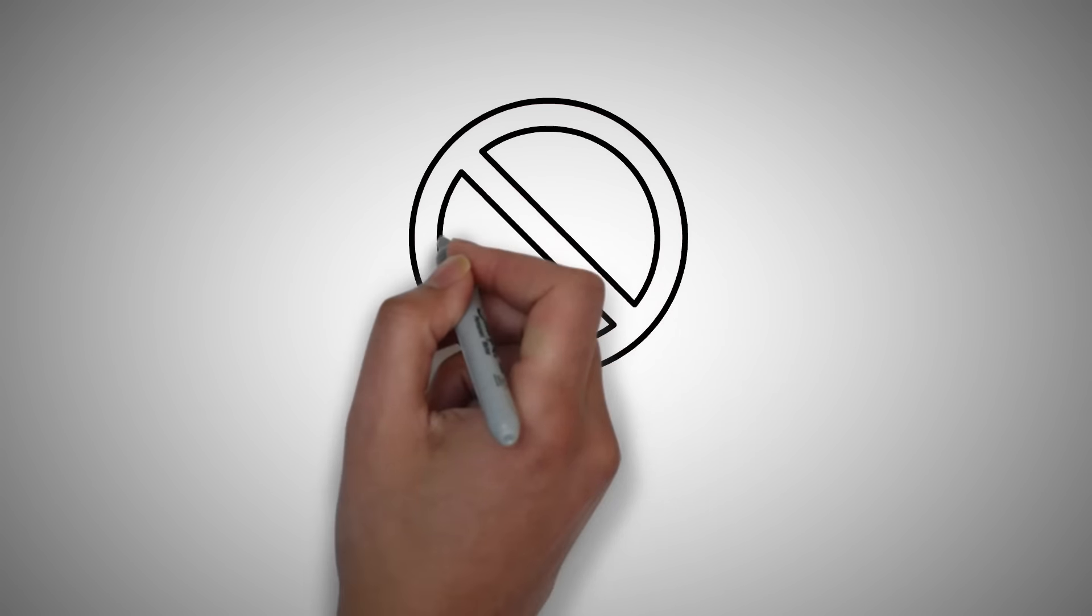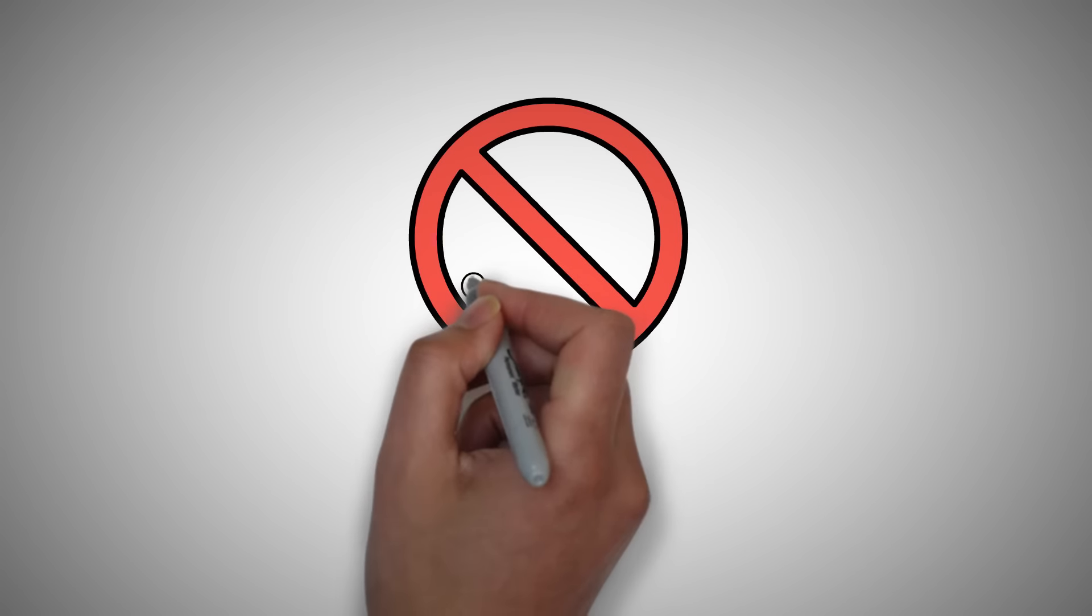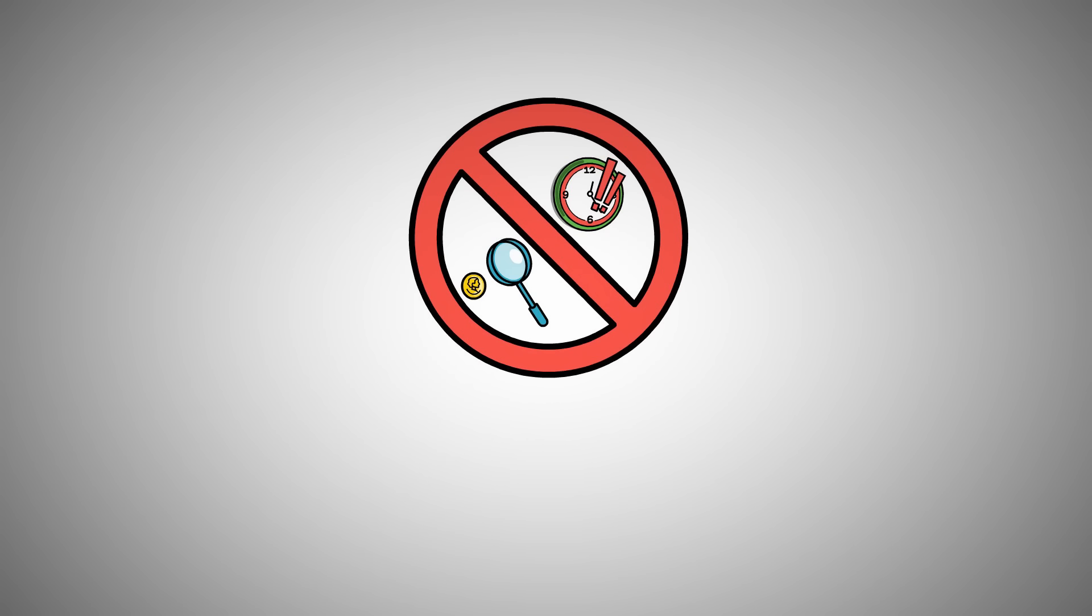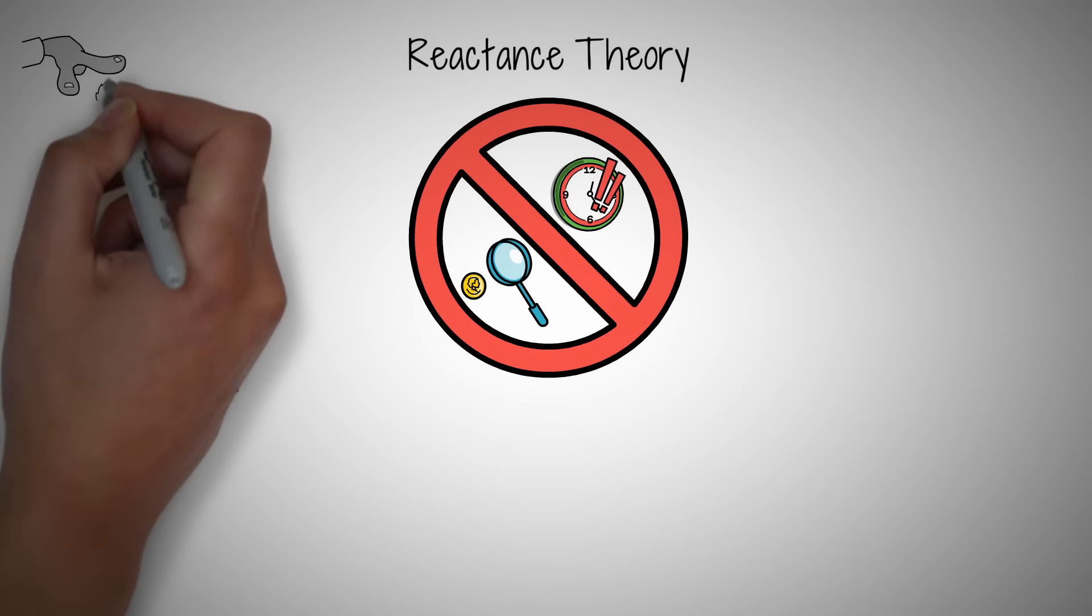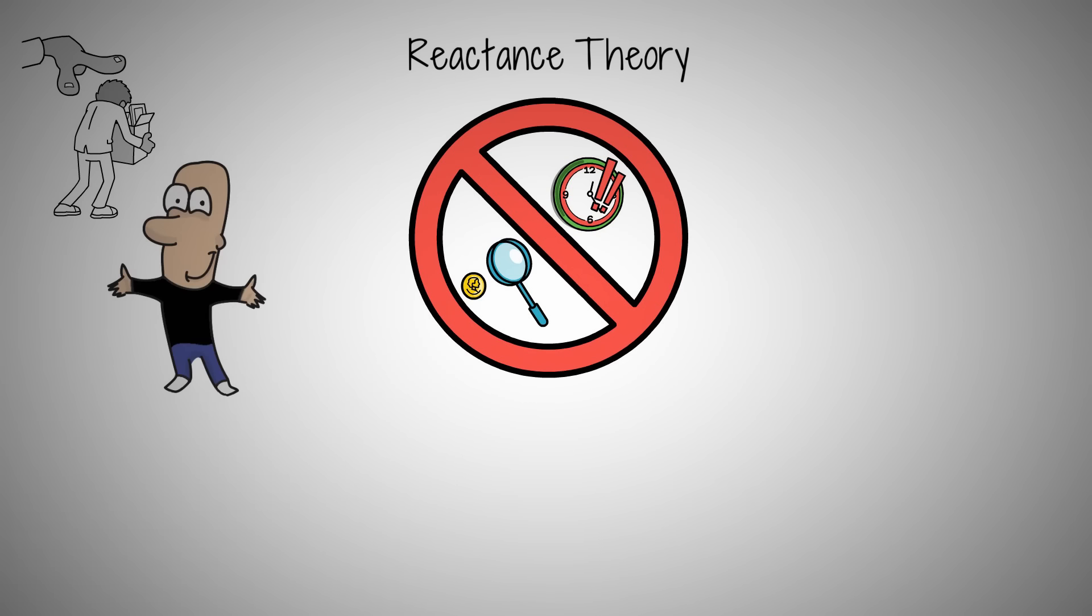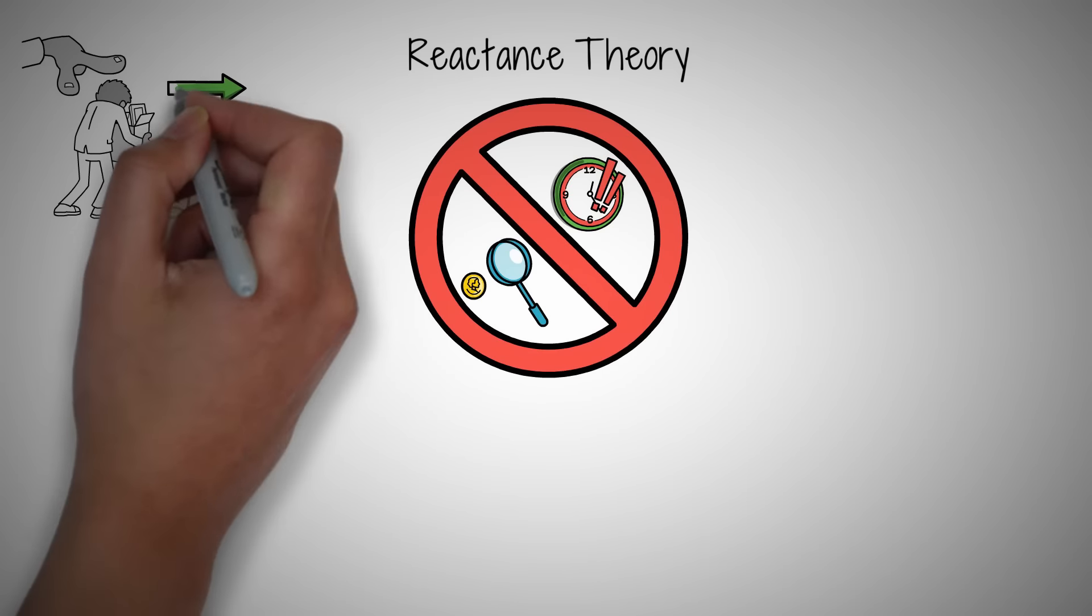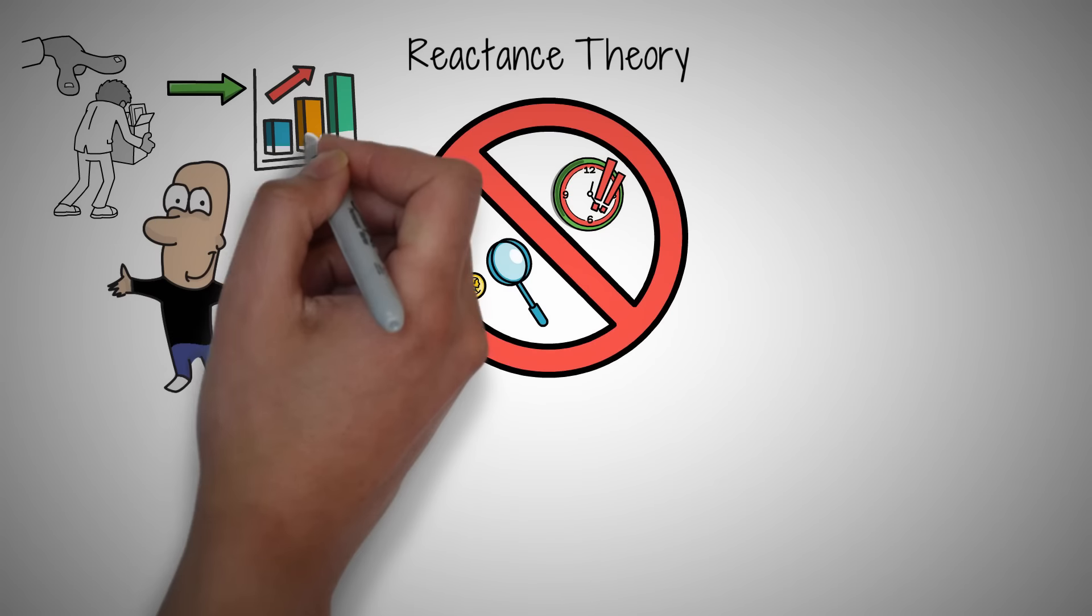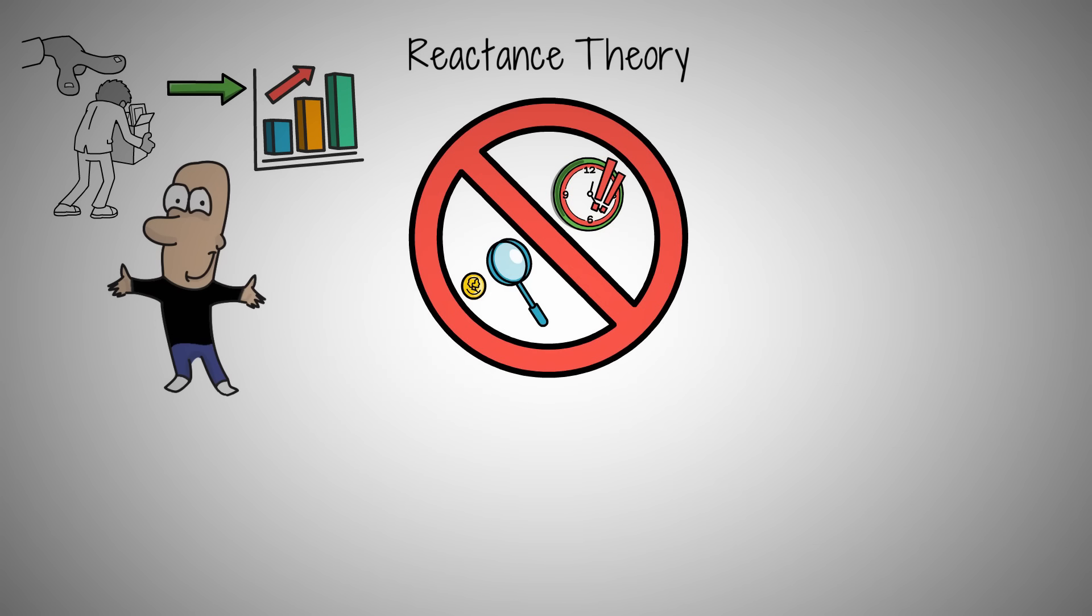Why do we often want something more when we're told we can't have it? This is not just stubbornness, it's a psychological phenomenon known as reactance theory. Take the story of Steve Jobs. When he was kicked out of Apple, the company he co-founded, instead of retreating, Jobs used this setback as a catalyst. He founded Next and Pixar, paving his way back to Apple with even greater innovations.